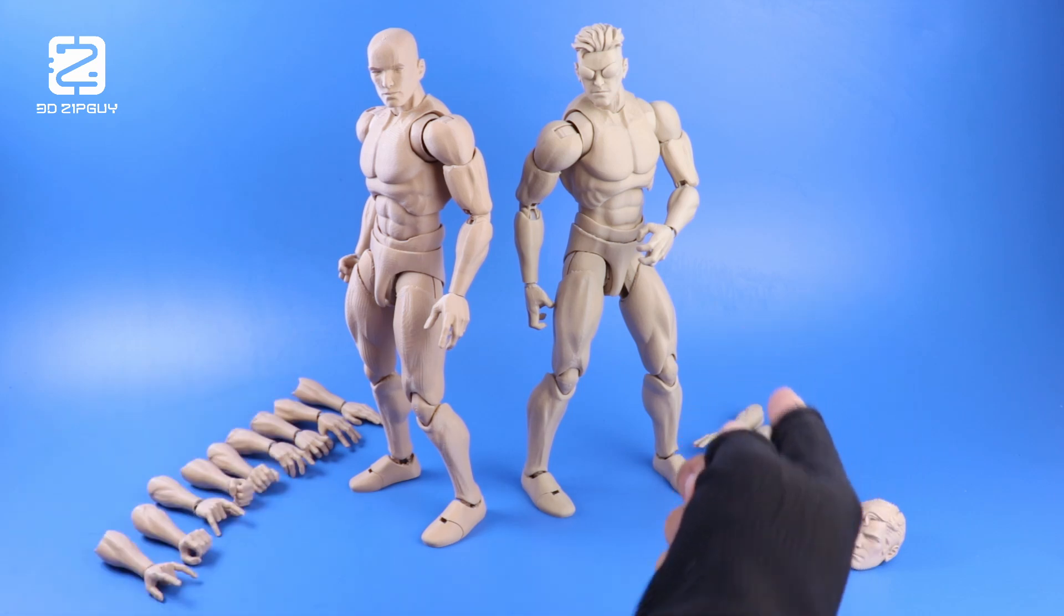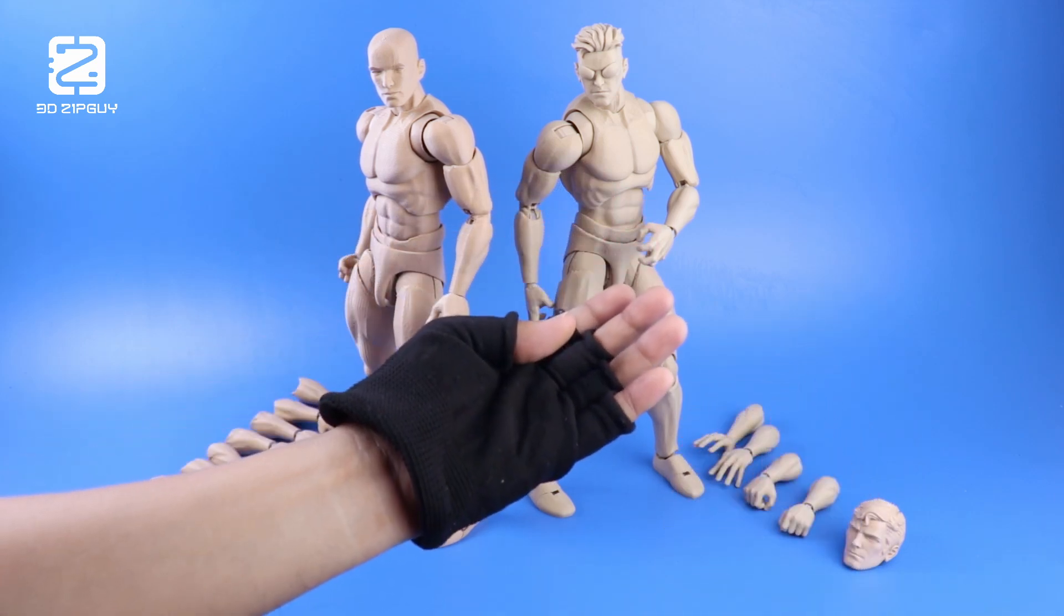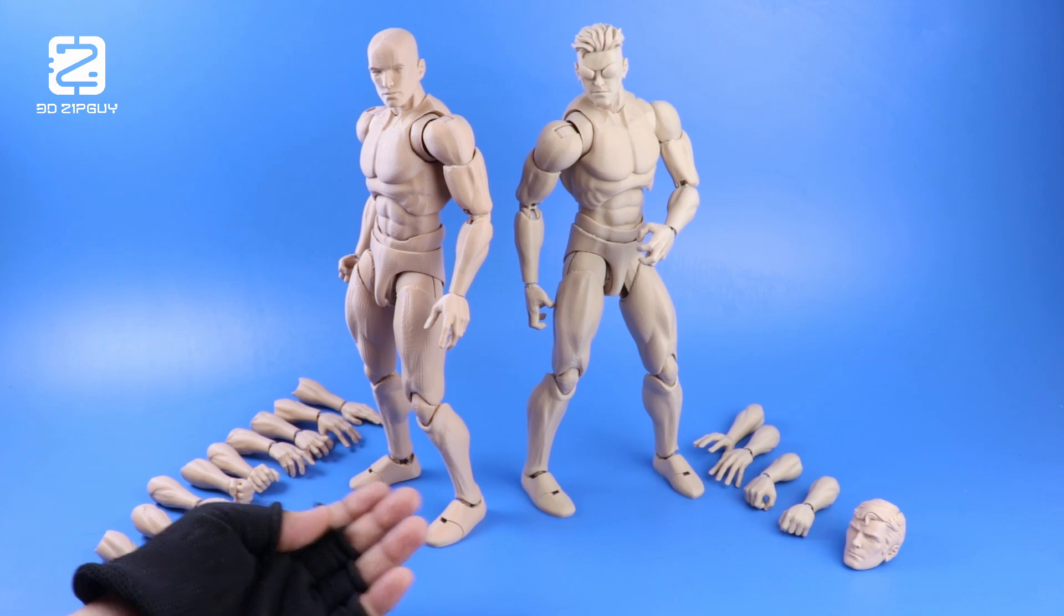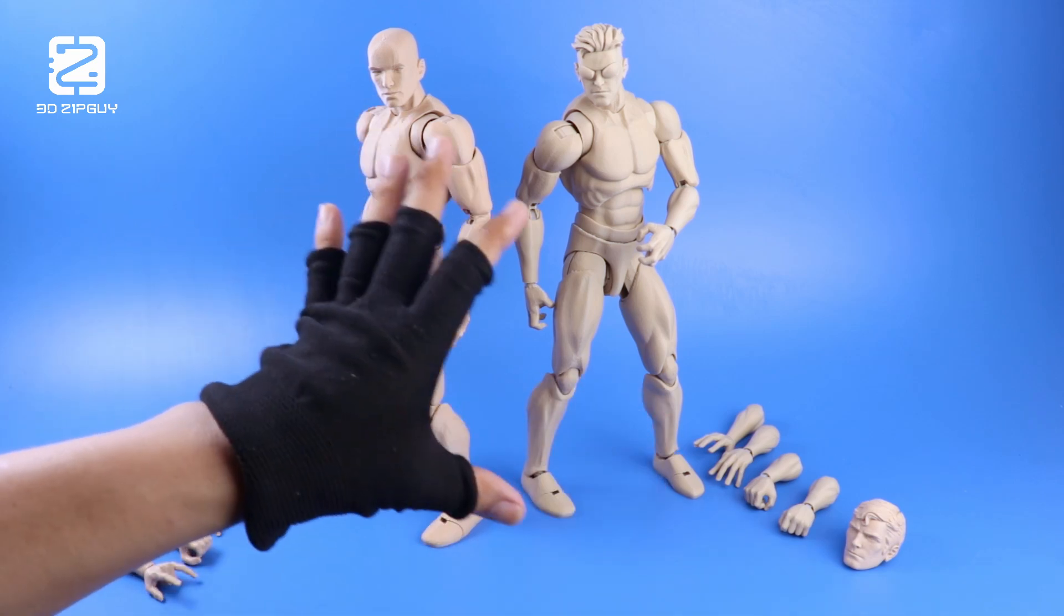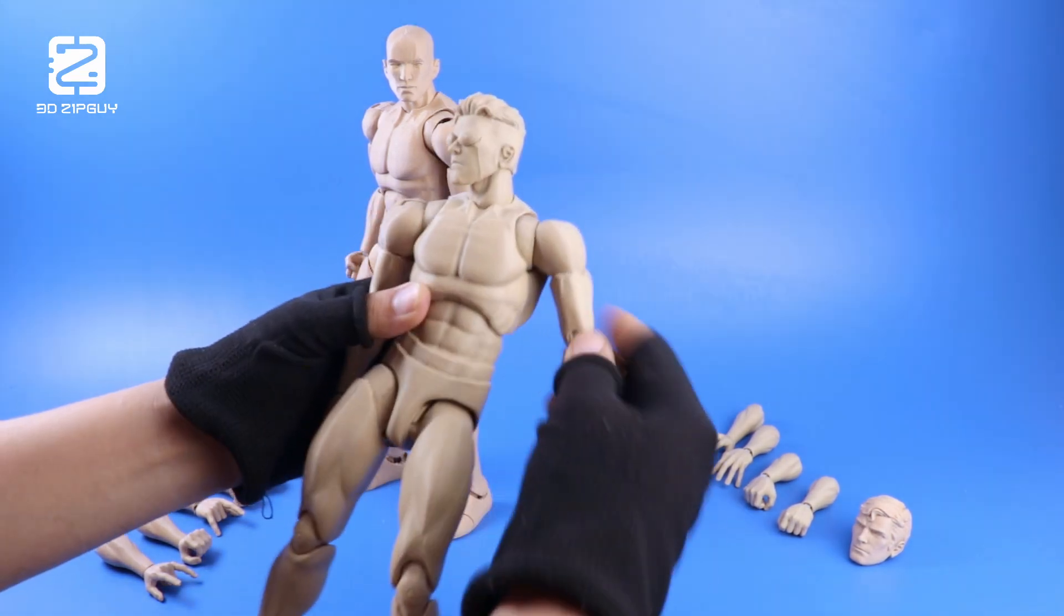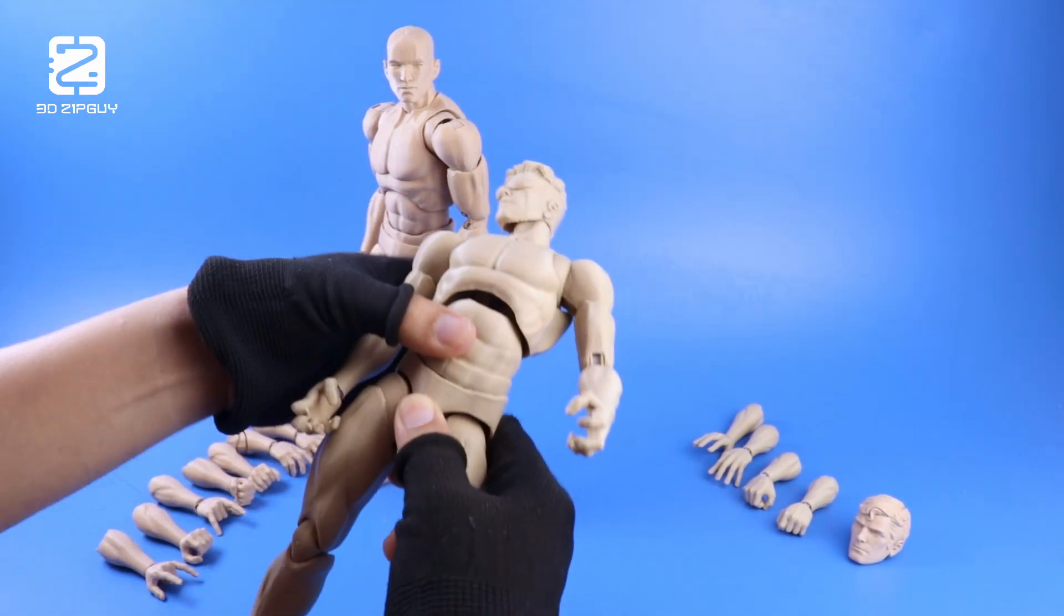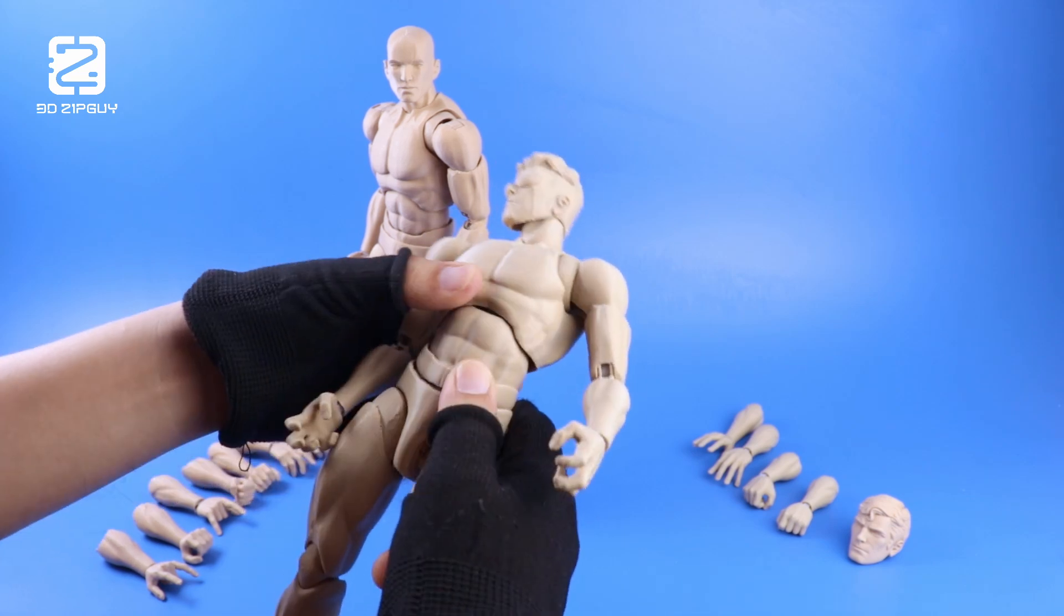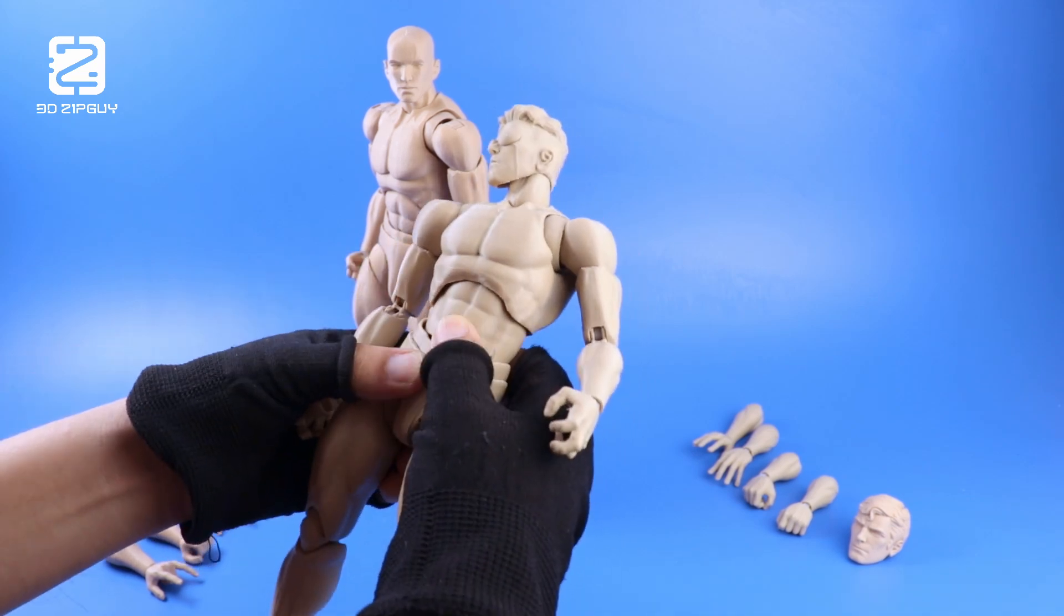I printed these figures at 185% scale. The guy on the right was printed in Sunlu PLA plus 2.0 Burley wood filament, generously provided by Sunlu, by the way. I really like that it's not too glossy and how tough the filament is. I've been playing with these figures for a while and so far this guy on the right is holding up really well.